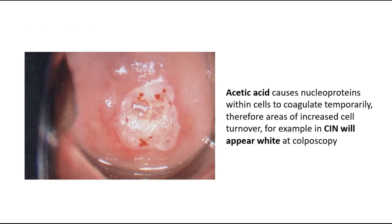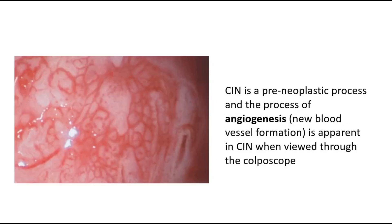This picture shows the cervix after applying acetic acid solution. It causes the nuclear proteins within the cells to coagulate temporarily. Therefore, those abnormal areas with increased cell turnover — for example in cervical intraepithelial neoplasia (CIN) — appear white during colposcopy, as shown in this picture. Because cervical intraepithelial neoplasia is a pre-malignant change of the cervix, it can cause cervical cancer in the long term.